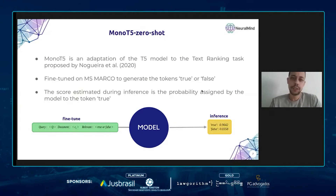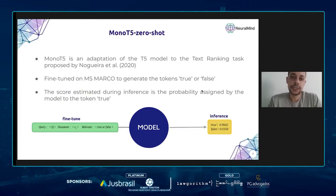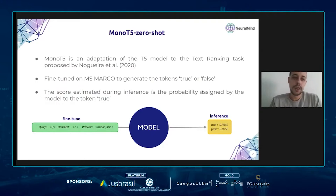MonoT5 is an adaptation of the T5 model for the task of text ranking, proposed by Nogueira et al. in 2020. The model was trained on the MS MARCO dataset, a large dataset with half a million text passages built for text ranking and question answering. During fine-tuning, MonoT5 is trained to generate the tokens 'true' or 'false' depending on the relevance between a document and a query, using an input template where Q represents the query and C is the candidate document. During inference, the model estimates a relevance score given by the probability assigned to the token 'true'.